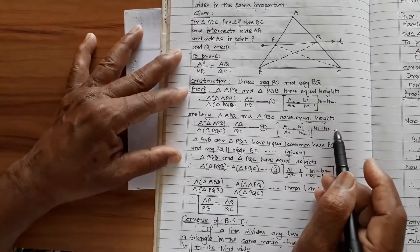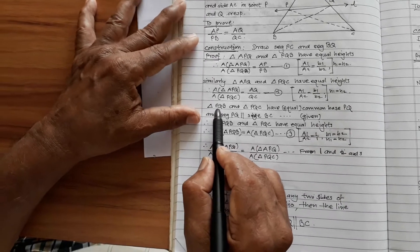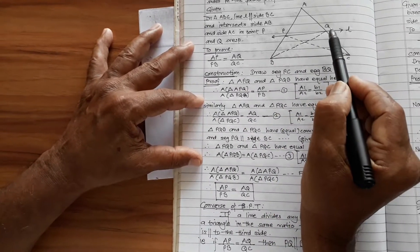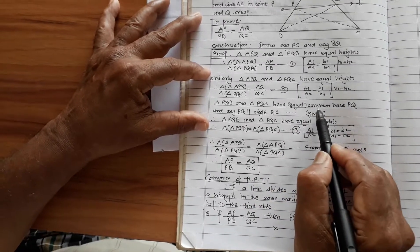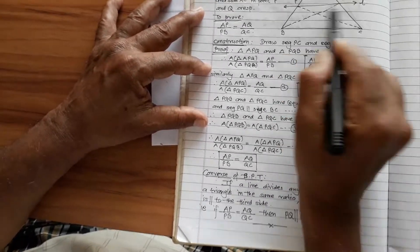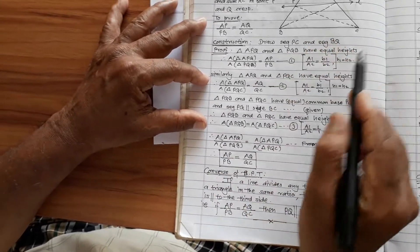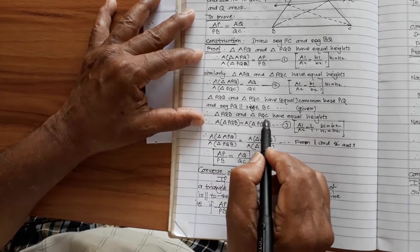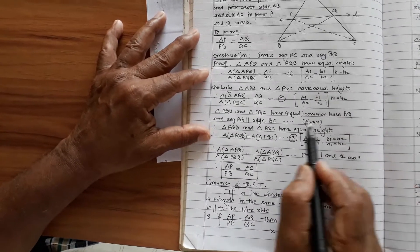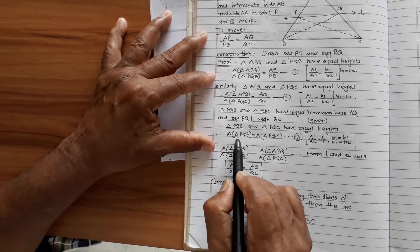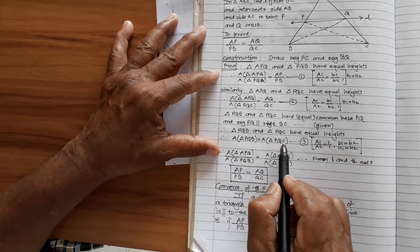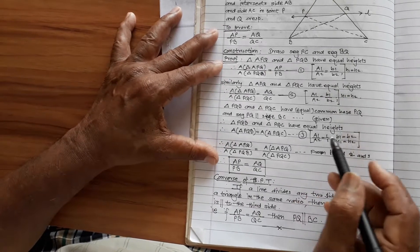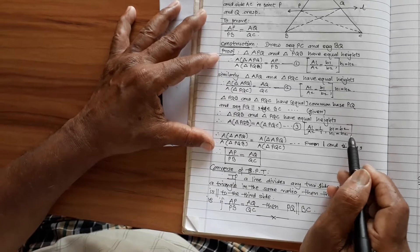Now, triangle PQB and triangle PQC have a common base PQ, and since PQ is parallel to BC as given, triangle PQB and triangle PQC have equal height and equal base. Therefore, area of triangle PQB is equal to area of triangle PQC. This is statement number three. Reason: A1 upon A2 equals 1 upon 1 when B1 equals B2 and H1 equals H2.